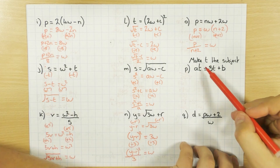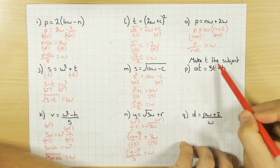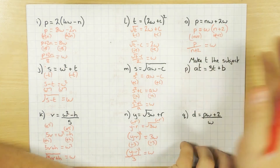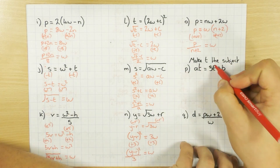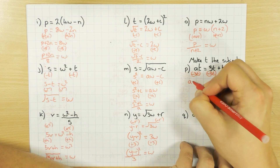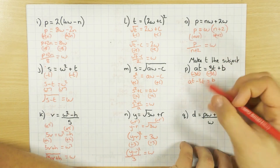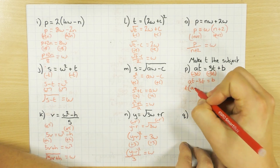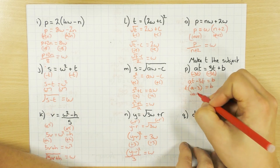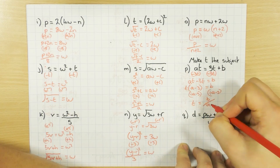I copied down the example wrong and instead of having Ws I put Ts. So this time I'm making T the subject — I've got a T on the left hand side and a T on the right hand side. I need to get them all on the same side, so I'll get them all on the left hand side by subtracting 3T from both sides. So on the left I'll have AT minus 3T, and that equals B on the right. All the Ts are on the same side, so I factorize: T outside the brackets, A minus 3 inside, equals B. Then divide by (A minus 3) both sides, leaving T equals B divided by (A minus 3).